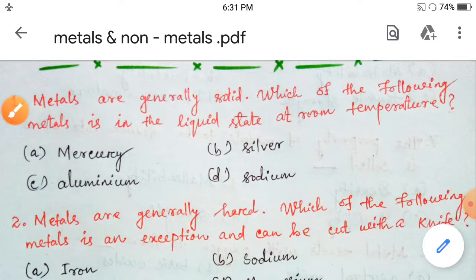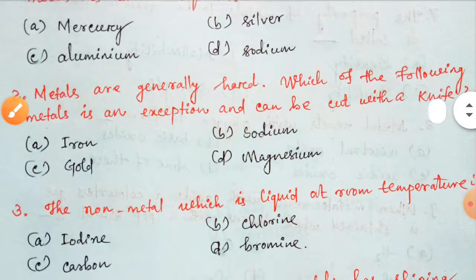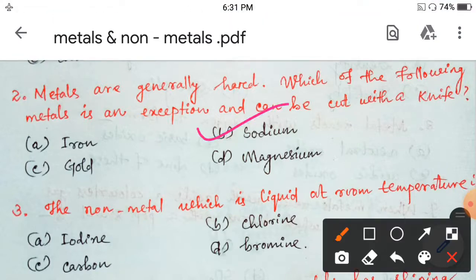Next, Question Number 2. Metals are generally hard. Which of the following metals is an exception and can be cut with a knife? Options given are Iron, Sodium, Gold and Magnesium. Metals are generally hard, but which metal is soft and can be cut with a knife? That is your Sodium, which is very soft and can be cut with a knife. Your option B is correct.